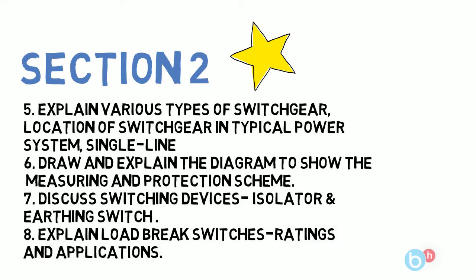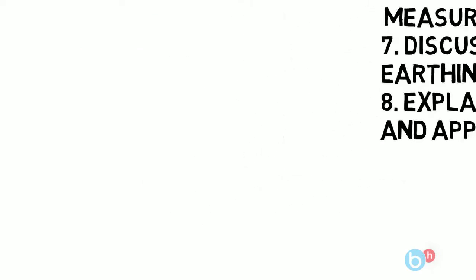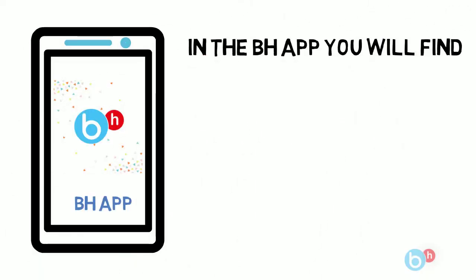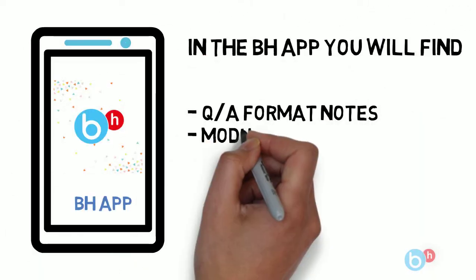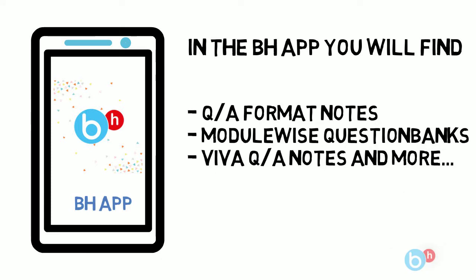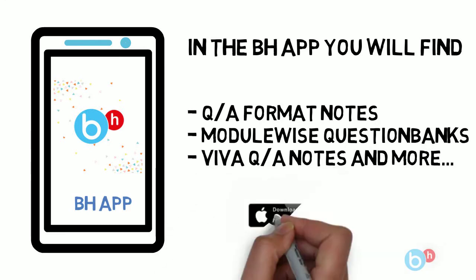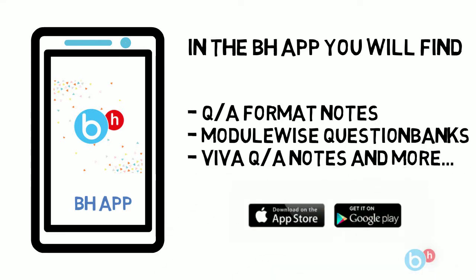These are the eight important questions for sections one and two. If you're looking for more detailed answers and questions, you can check out the Brain Eaters app, where you'll find question banks and BH notes.